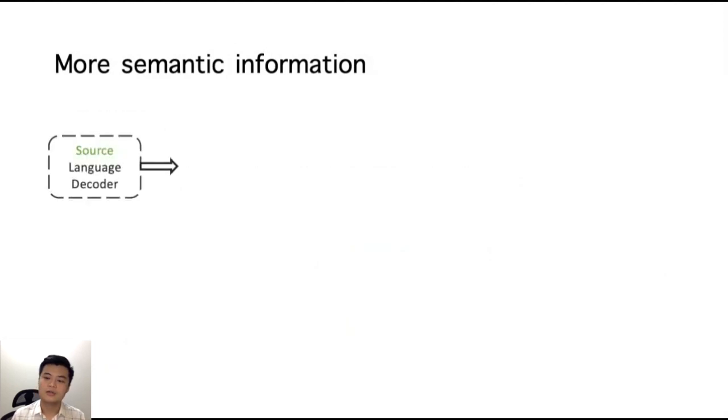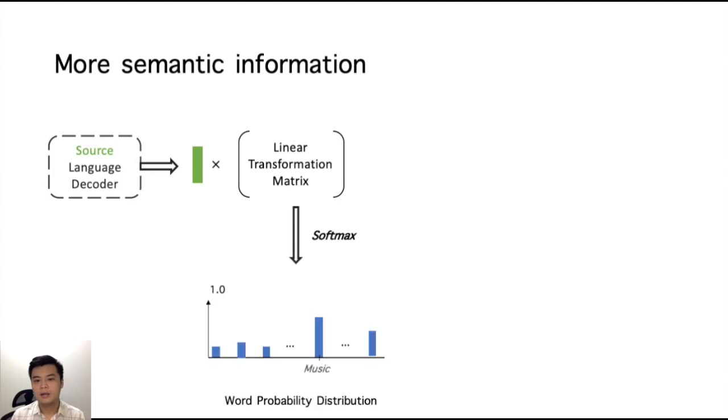Considering a normal recognition decoding process: a hidden state from the source language decoder will be multiplied by a linear matrix, and the softmax function is applied to obtain a word probability distribution. The optimization process aims to make this distribution close to the ground truth.